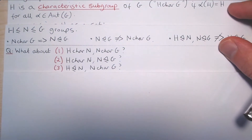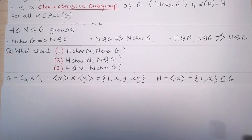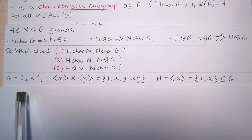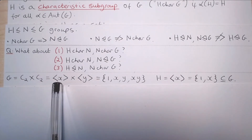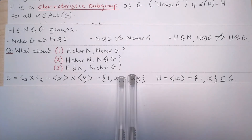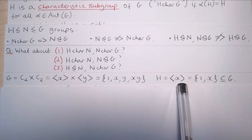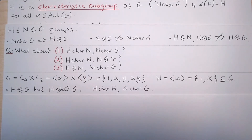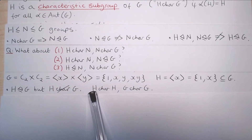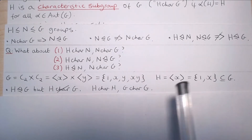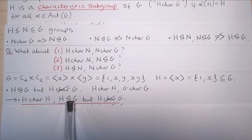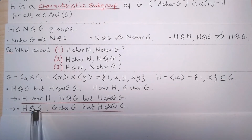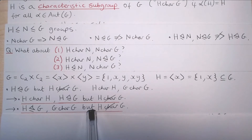Before we do that, recall that in part one we had the following group — the Klein 4-group. This is the cyclic group of order 2 direct product with itself, generated by elements X and Y, giving a 4-element group. We then had a subgroup H of order 2 of G. H is normal in G but we showed that H was not characteristic in G. Note that H is characteristic in itself, as is G. So we have an example where H is characteristic in H, H is normal in G, but H is not characteristic in G. And H is normal in G, G is characteristic in G, but H is not characteristic in G.